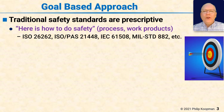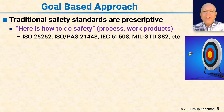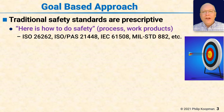ISO 4600 uses a goal-based approach to safety. Traditional safety standards, such as ISO 26262 and others, are more prescriptive. They say, here's how to do safety, and they give you a process or process elements you're required to perform, and they tell you which work products you're supposed to produce.